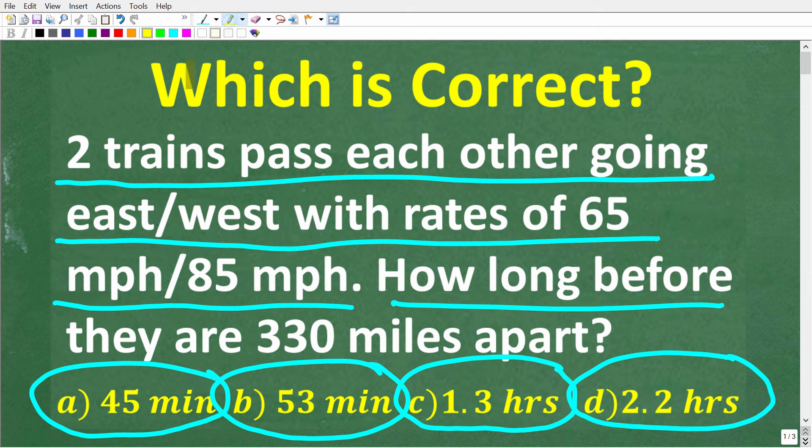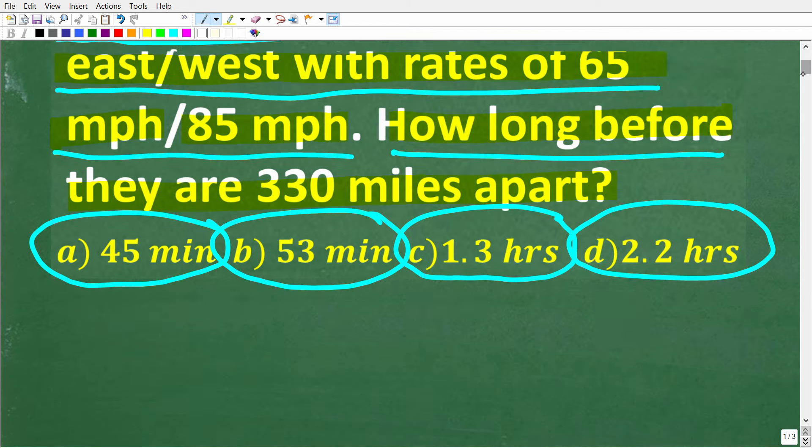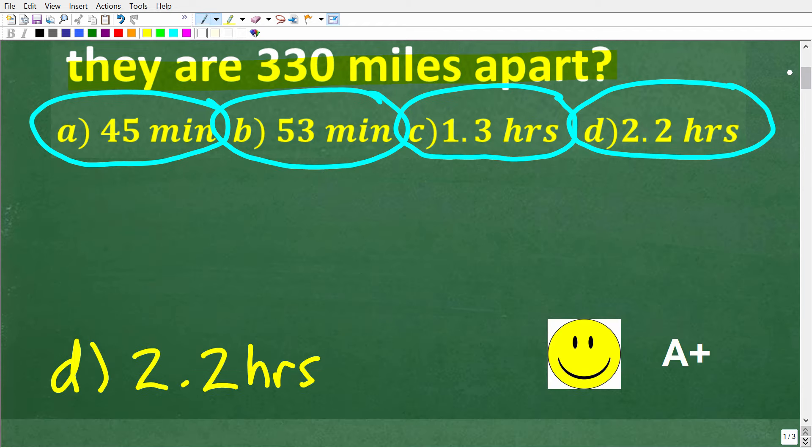Alright, so one more time we have two trains that are passing each other on the track going east and west with rates of 65 mph and 85 mph. How long before these trains are 330 miles apart? Well, the correct answer here is D, which of course is 2.2 hours.